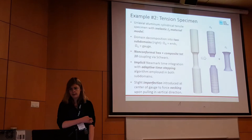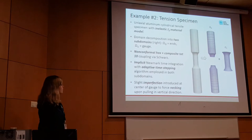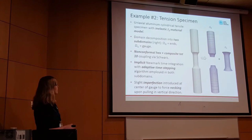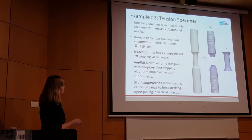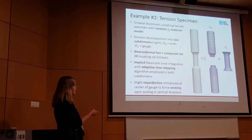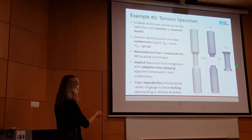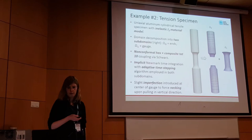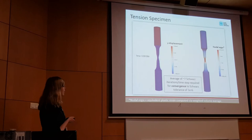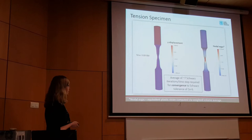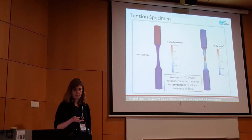The second dynamics example, moving towards production, is a tension specimen — a uniaxial aluminum cylindrical tensile specimen. We model it with an inelastic G2 material model, which is much more sophisticated than the others I showed. It's pulled from both ends and stretched. We put a hex mesh in the outer domain and a fine high-order composite 10-node tetrahedron mesh in the middle domain. There's a very slight imperfection introduced in the middle to force necking exactly there. The simulation shows the expected necking behavior and matches well with the single-domain solution, taking about seven Schwartz iterations per time step.